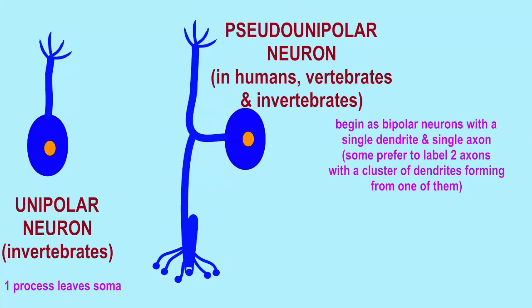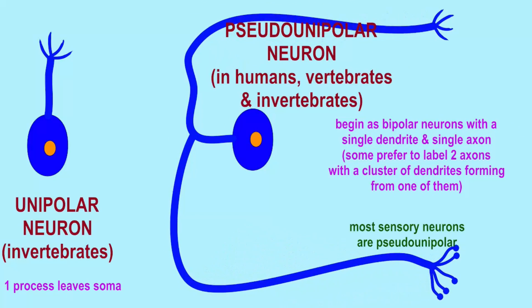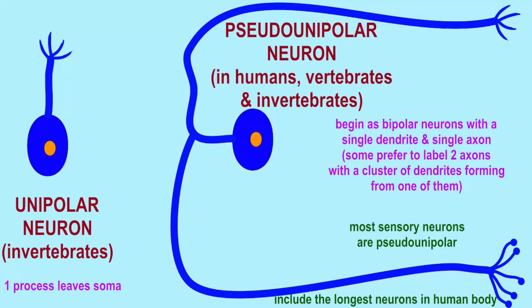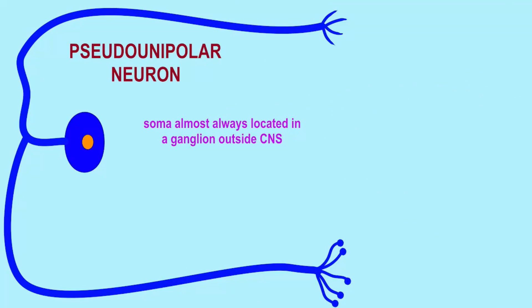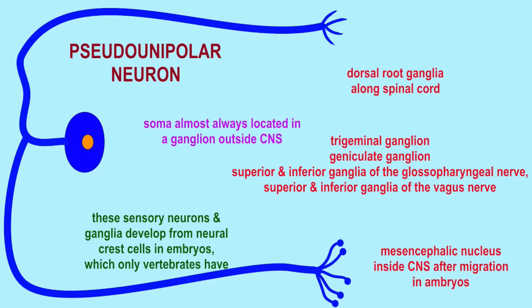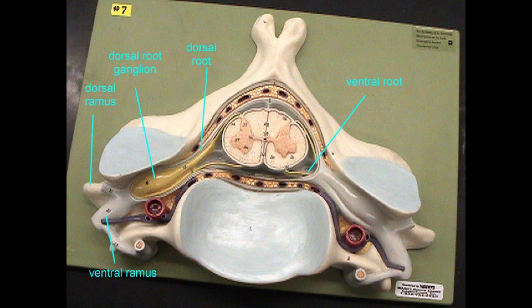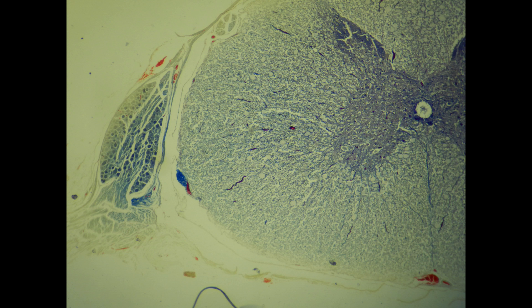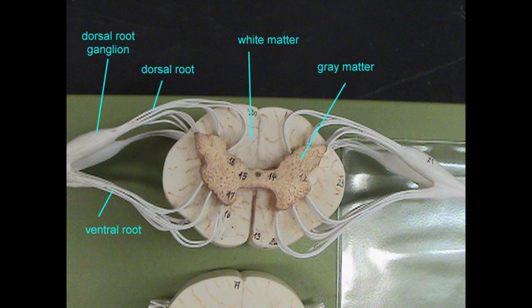If the soma is in the middle of the cell, that raises the question: where does one find it? Most soma are found outside the central nervous system, and the term for a cluster of soma outside the CNS is a ganglion. There are ganglia associated with some cranial nerves, and along the spinal cord run chains of dorsal root ganglia.